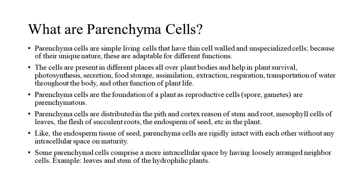Parenchyma cells are the foundation of a plant, as reproductive cells — spores and gametes — are parenchymatous. Parenchyma cells are distributed in the pith and cortex region of stem and root, mesophyll cells of leaves, the flesh of succulent roots, the endosperm of seeds, and other locations in the plant.